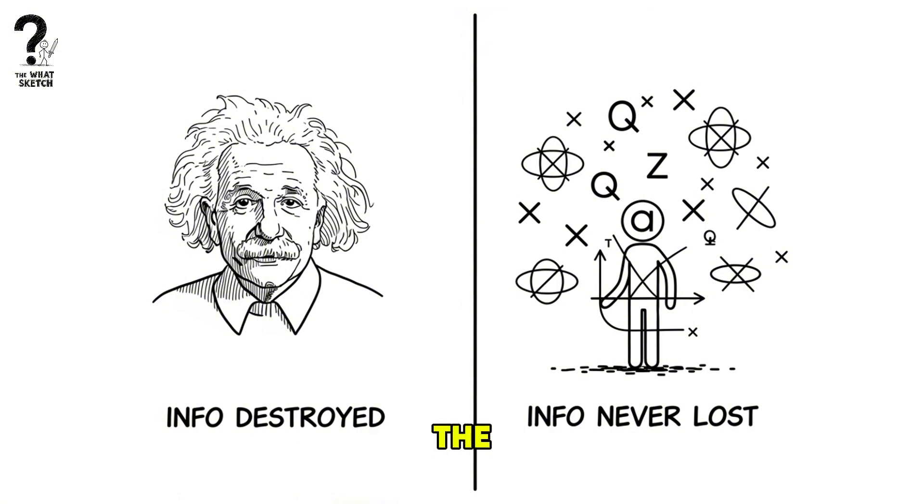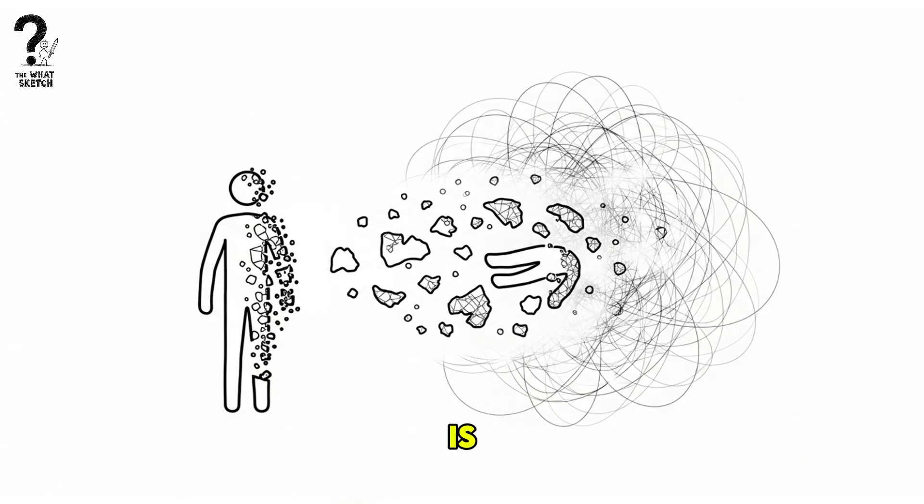Quantum mechanics, on the other hand, insists that information can never be truly lost. This conflict is a sign that our understanding of the universe is incomplete, and it's where our story takes a speculative turn.